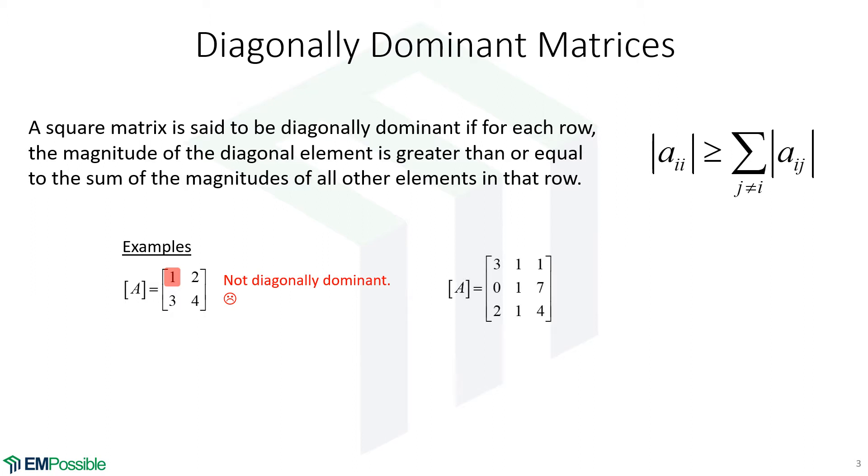Here's a new matrix. Is this diagonally dominant? This is not diagonally dominant because of the second row. We have a one in this position, and that's less than seven over here.